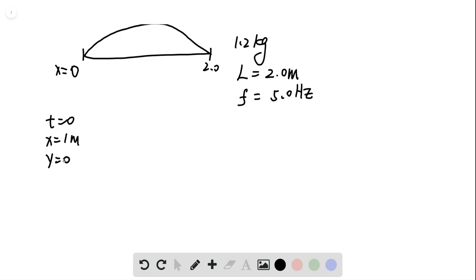And then this rope is moving upward in the positive direction of y axis, and it has a transverse velocity of five meter per second.